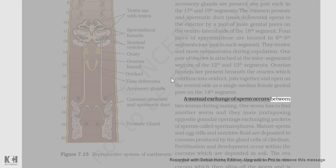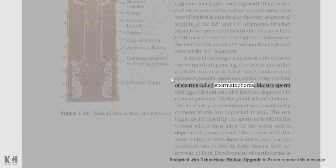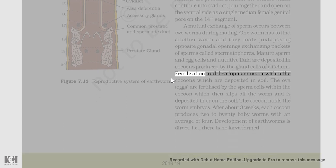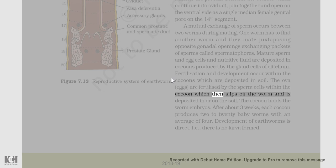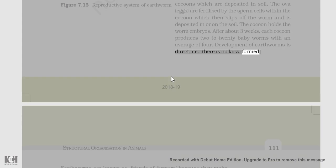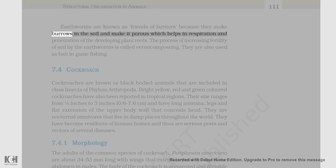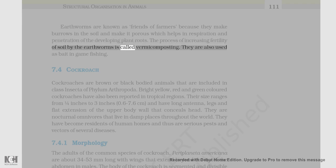A mutual exchange of sperm occurs between two worms during mating. One worm has to find another worm and they mate, juxtaposing opposite gonadal openings and exchanging packets of sperms called spermatophores. Mature sperm and egg cells and nutritive fluid are deposited in cocoons produced by the gland cells of the clitellum. Fertilization and development occur within the cocoons which are deposited in soil. The ova (eggs) are fertilized by the sperm cells within the cocoon, which then slips off the worm and is deposited in or on the soil. The cocoon holds the worm embryos. After about three weeks, each cocoon produces two to twenty baby worms with an average of four. Development of earthworms is direct, i.e., there is no larva formed. Earthworms are known as friends of farmers because they make burrows in the soil and make it porous, which helps in respiration and penetration of developing plant roots. The process of increasing fertility of soil by earthworms is called vermicomposting. They are also used as bait in game fishing.